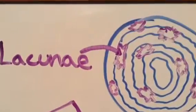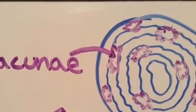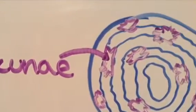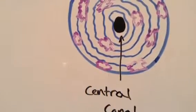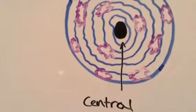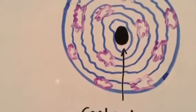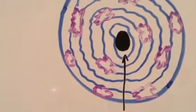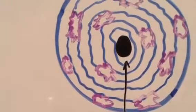The lacunae lie within the lamellae and they are the housing for the osteocytes. One other structure I should mention is the central canal. The central canal runs lengthwise through the bony matrix and it ranges from 25 to 100 micrometers.